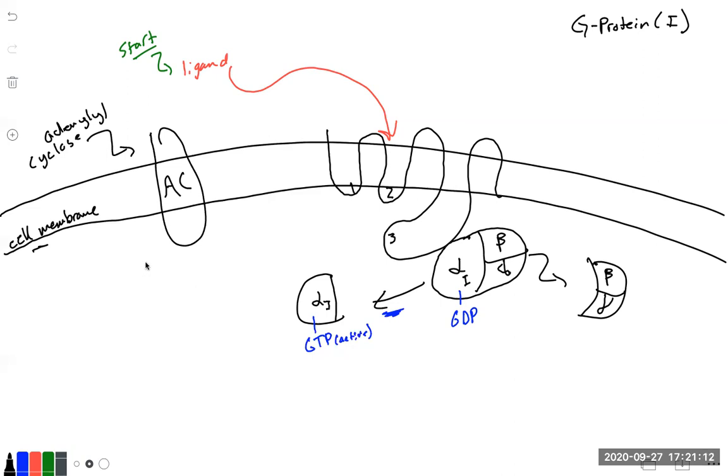Well, we knew when cyclic AMP rose, it stimulated protein kinase A and proteins were phosphorylated. Well, our inhibitory alpha subunit is actually going to go and inhibit adenylyl cyclase. Well, what happens if adenylyl cyclase is inhibited? Our cyclic AMP will stay low. Well, what happens with cyclic AMP staying low?